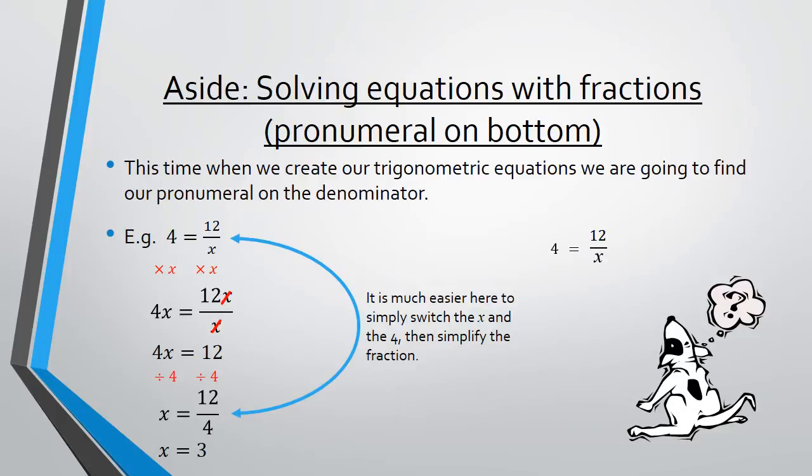So if we have a look at that in action, 4 equals 12 over x. Switch the 4 and the x. And we end up with x equals 12 over 4, which is 3. So we have the same answer.